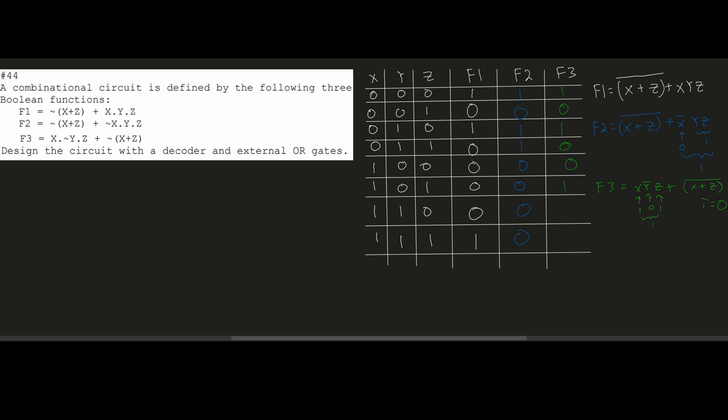For the last two rows, X is 1 for both, so X+Z gives 1. Taking the NOT of that is 0, giving us 0 and 0. We've completed our truth table.